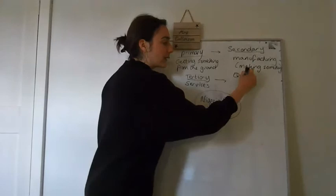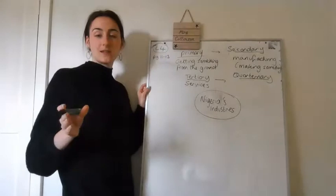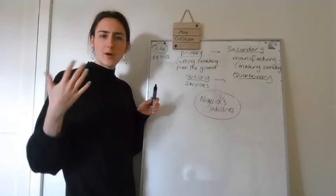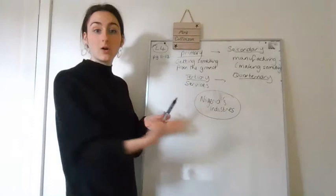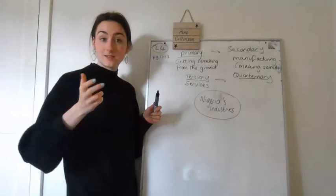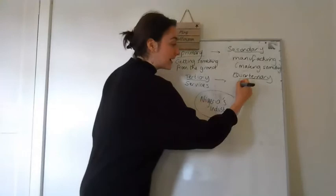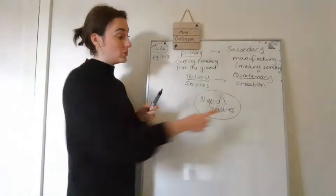And the last one is quaternary. Now quaternary is what you'd only really find in a HIC country, a really high income country. And quaternary is the thinking of new ideas, coming up with new things. So working for Apple or Google or Microsoft and coming up with new web designs or a designer of a car or literally inventing something new, a scientist that develops new medicines or vaccines. So people working on the vaccination against the coronavirus, they're in the quaternary sector. So that is all about creation, creating something new.